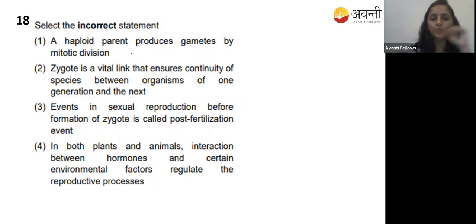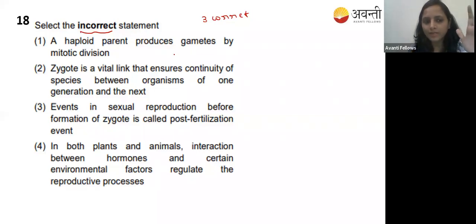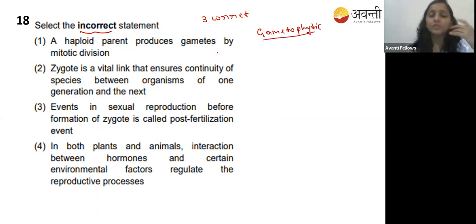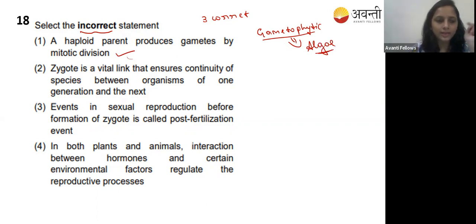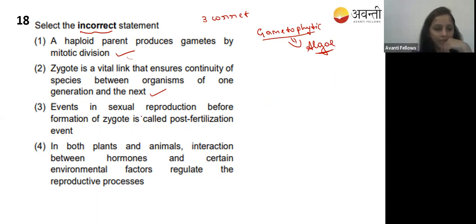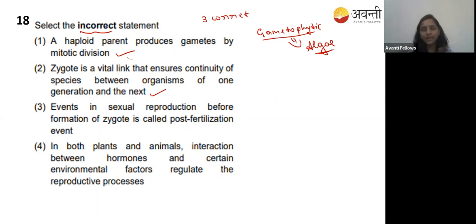Eighteenth question: select the incorrect statement. Option one - a haploid parent produces gametes by mitotic division. Yes - in the gametophytic stage, the parent is in haploid state and mitosis occurs to produce gametes, as in algae. That is correct. Option two - zygote is a vital link ensuring continuity of species between generations. Yes, that is also correct.